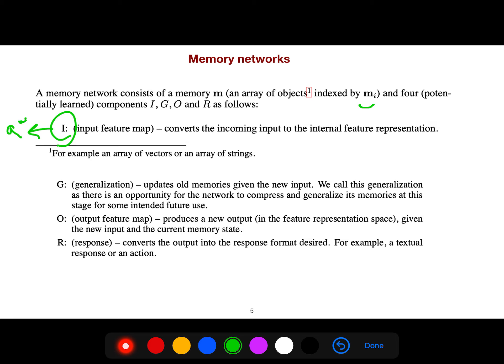For example, where is the milk? This is the question. But the generalization is very important. We call this generalization as there is an opportunity for a network to compress and generalize its memories at this stage for some intended future use. So it just updates all memories given the new input.